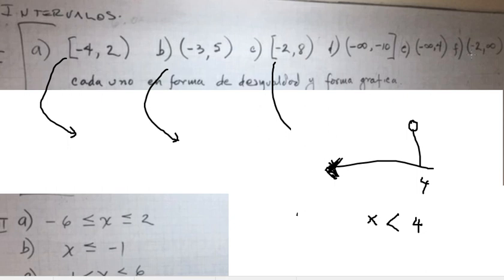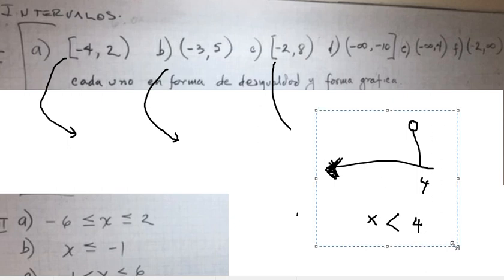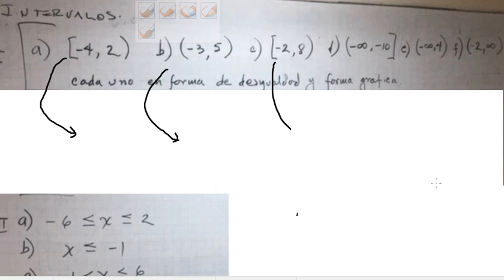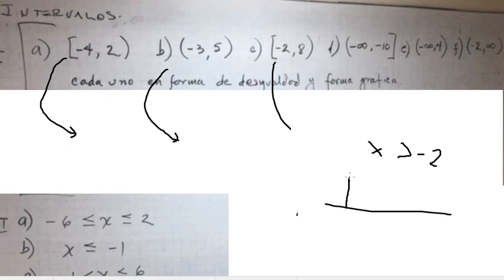The last one in this set is from negative two to positive infinity. That means s is greater than negative two. The figure should show the arrow highlighted going to positive infinity.